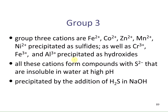The group 3 ions are iron, cobalt, zinc, manganese, nickel, as well as chromium, iron, and aluminum—but chromium, iron, and aluminum are precipitated as the hydroxides. All these cations form compounds with sulfide that are insoluble in water at high pH. Going back to the hydrogen sulfide equilibrium: at high pH, you have a low H⁺ concentration, so adding a base shifts the equilibrium to the right, increasing the sulfide concentration. Additionally, since you're adding a base, you're increasing the hydroxide ion concentration, and some of those hydroxides bind to the metals—which is why chromium, iron, and aluminum precipitate as hydroxides.